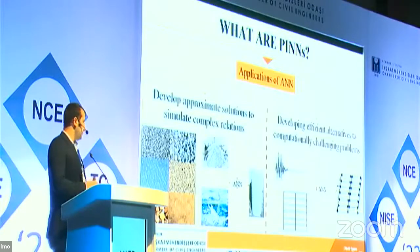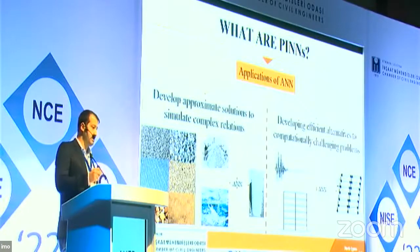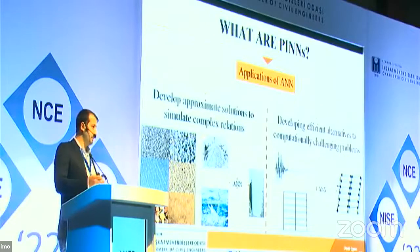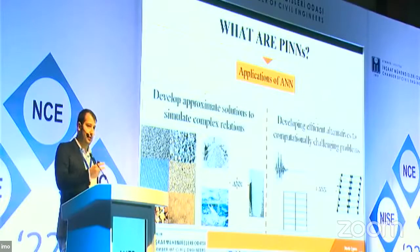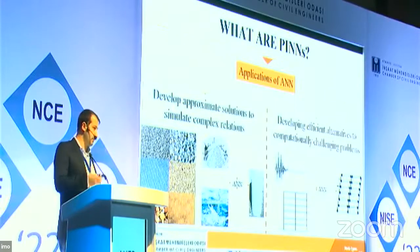The main applications of artificial neural networks are divided into two categories. First, you can develop approximate solutions to empirical relations that cannot be fully modeled mathematically — for example, predicting the compressive strength of concrete. If you have a solid database, you can input concrete properties and get its compressive strength, or ask the network to design a mix for a target compressive strength of, say, 30 MPa.